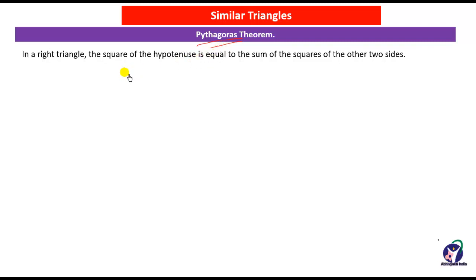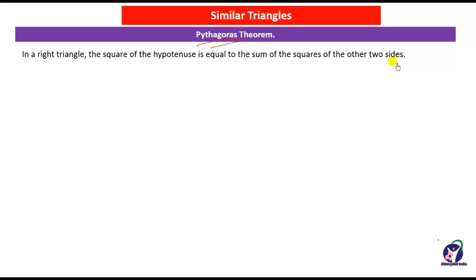We will learn how to prove the statement given by Pythagoras. Here is the statement: in a right triangle, the square of the hypotenuse is equal to the sum of the squares of the other two sides.